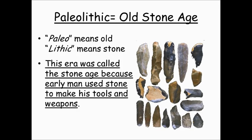So this is the Paleolithic Age — that's where we're going to start. Paleo means old, lithic means stone, so this era is known as the Old Stone Age. Why is it called the Old Stone Age? Almost all of the tools were made from stone. The tools and weapons were made of stone, and that's why this is known as the Stone Age.